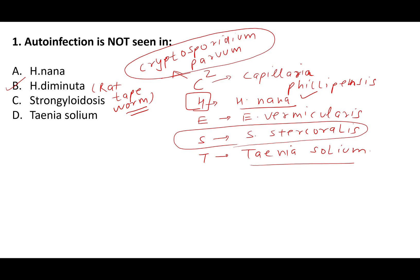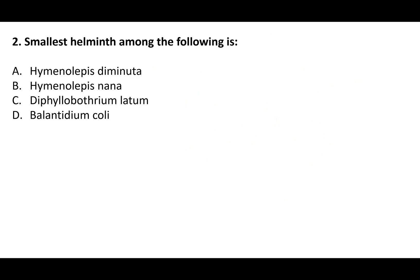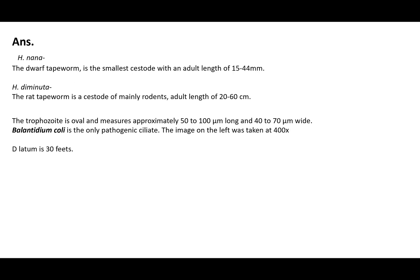The next question: which is the smallest helminth? H. nana, the dwarf tapeworm, is the smallest — length 15–44 mm. H. diminuta is the rat tapeworm. Balantidium coli trophozoite is oval, approximately 50–100 × 40–70 microns. D. latum (Diphyllobothrium latum, the fish tapeworm) is about 30 feet and is the longest. So the answer is clearly H. nana.